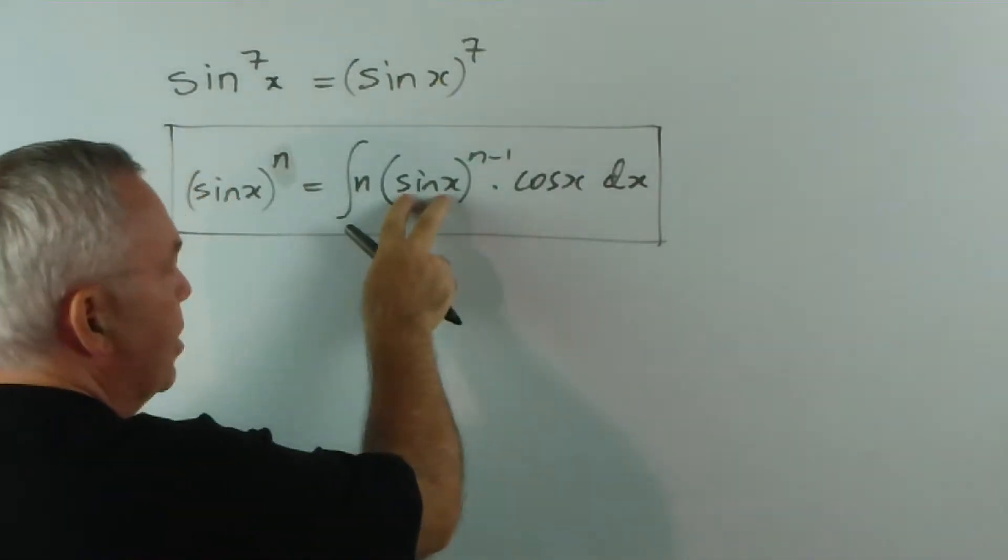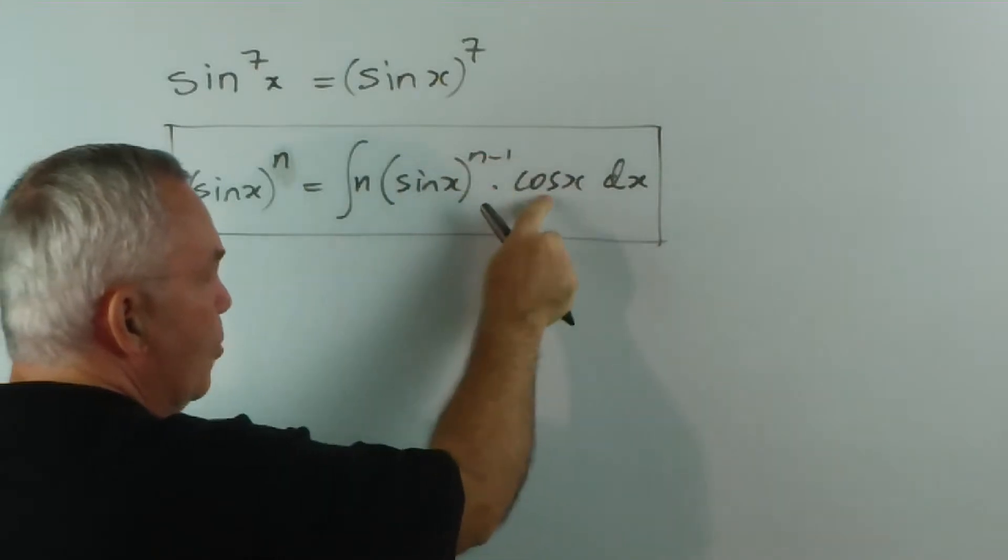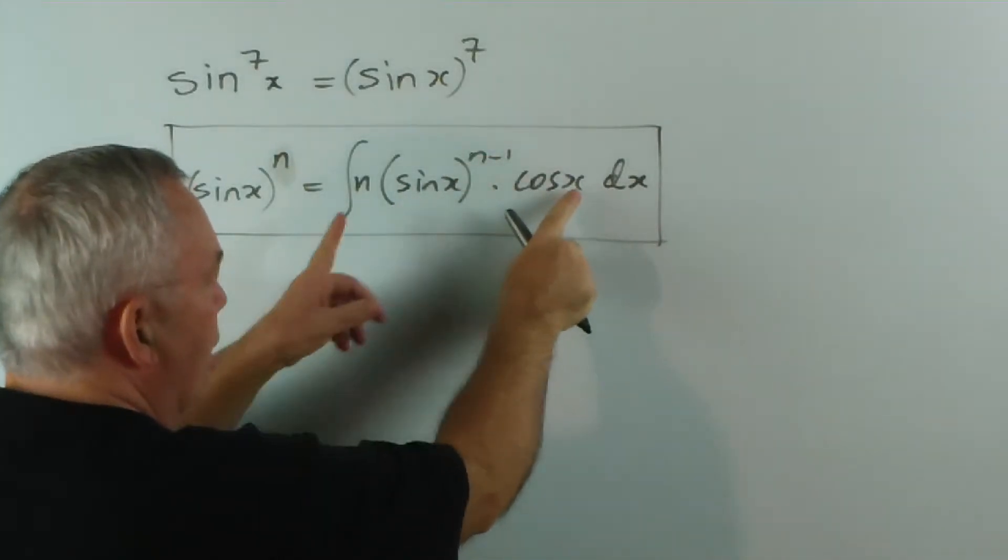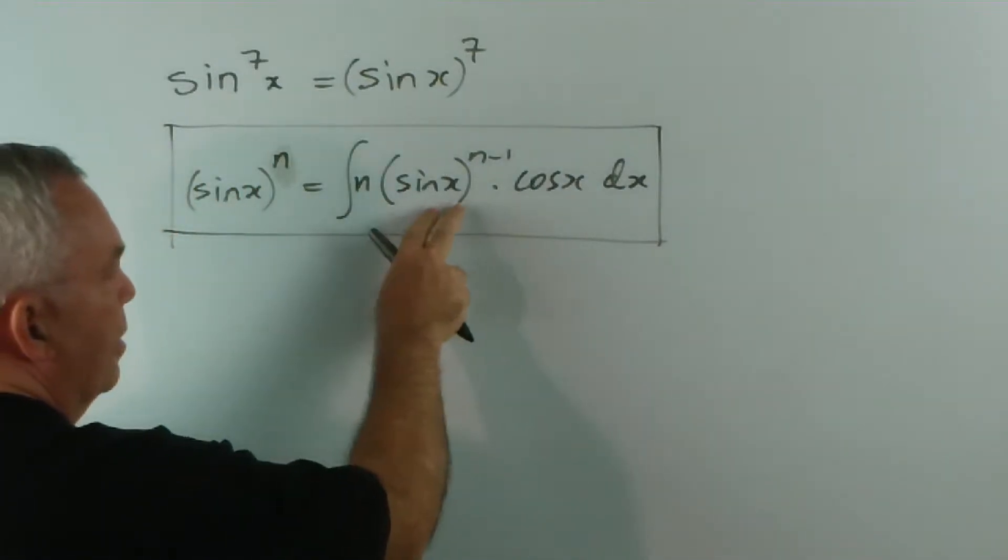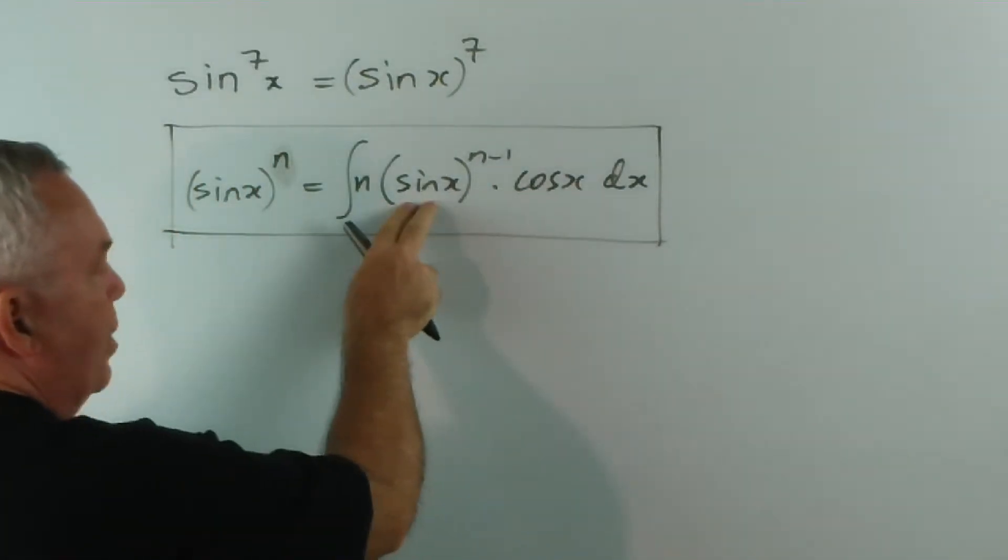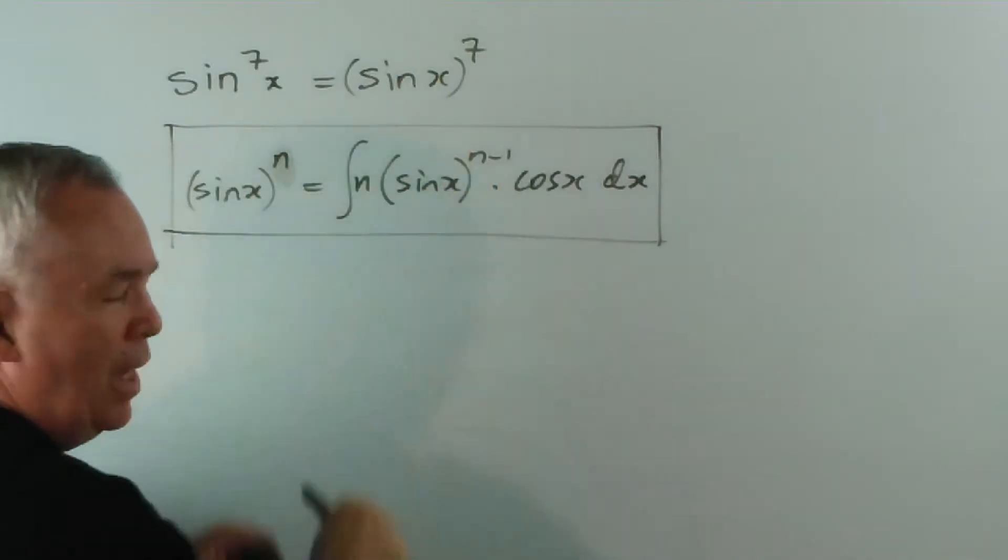is if we have a power of sine x with its derivative attached. And normally I would write this the other way around. So if we have cos x times the power of sine x, this is the pattern we're looking for.